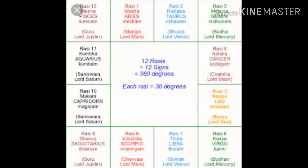Moving clockwise, the second sign is Taurus, also known as Vrushab. The third square is Gemini, also known as Mithun. Fourth is Cancer, also known as Karka. The fifth square is Leo, also known as Simha, and so on up to Rashi 12. The twelfth square is Mina, also known as Pisces.